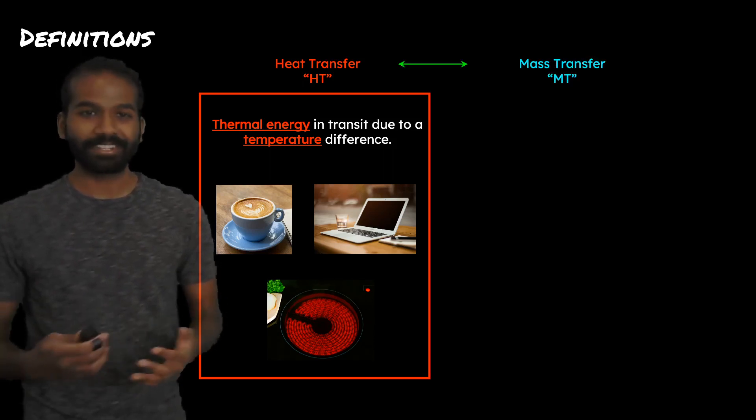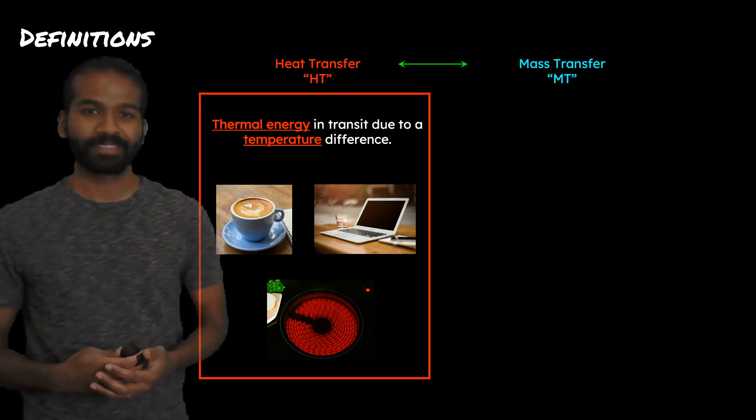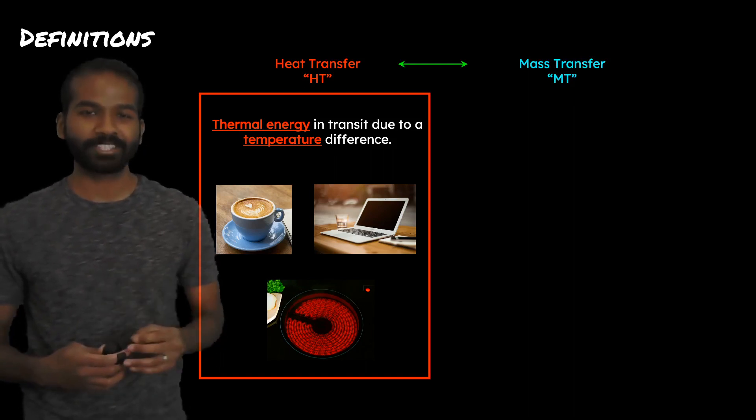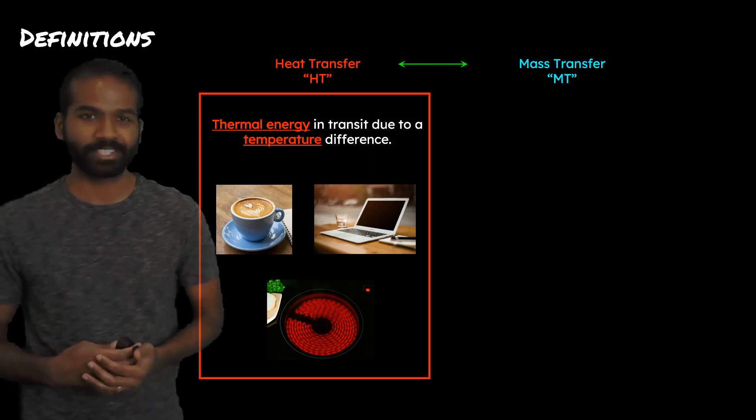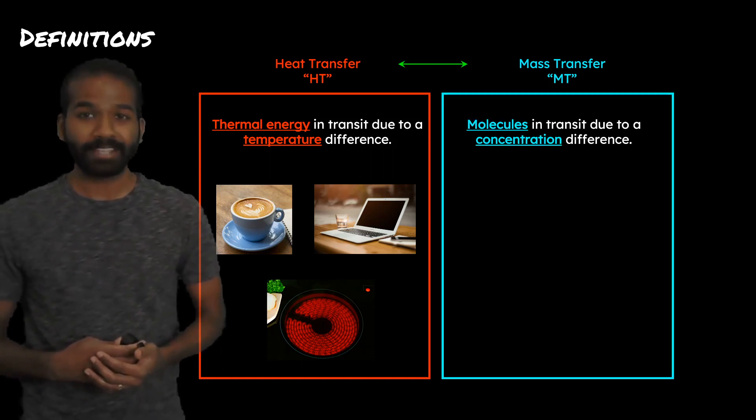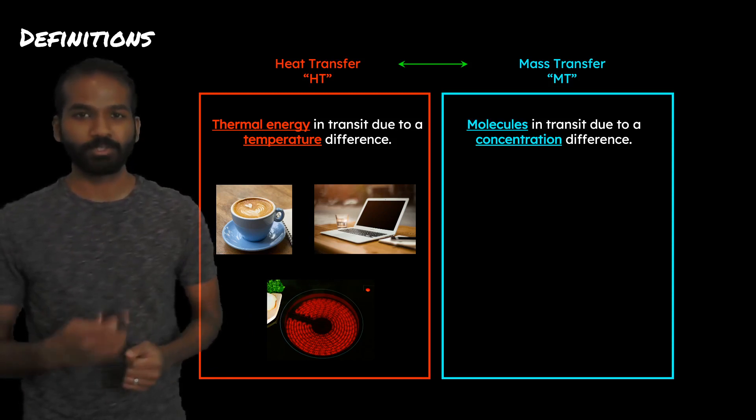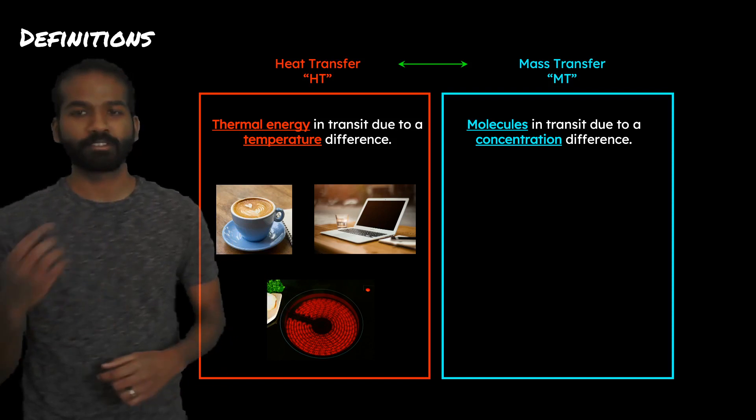We can now extend this definition to mass transfer as well. And you'll see that the definition of mass transfer has surprisingly strong similarities to heat transfer. Mass transfer is defined as molecules in transit due to a concentration difference. We replace thermal energy for molecules and temperature for concentration.